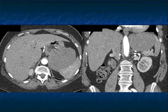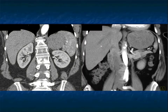Sometimes it's challenging. When you have large masses, the epicenter can be tricky. A key thing, of course, is trying to find the adrenal. If you find the adrenal, you know it's not an adrenal mass. And here's a beautiful, well-defined soft tissue mass — an exophytic GIST tumor.